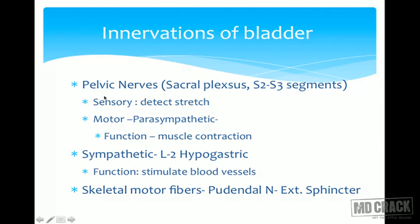The innervation of the bladder is mainly through the pelvic nerves via the sacral plexus, ending in the S2 and S3 segments of the spinal cord. The micturition reflex is integrated at the level of the spinal cord itself.